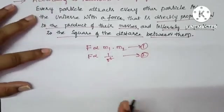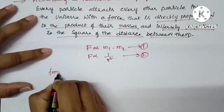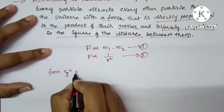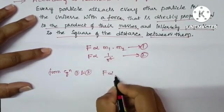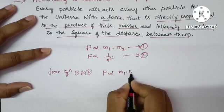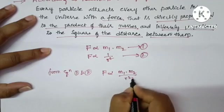From equation number 1 and 2, we can write F is directly proportional to m1 m2 upon r square. This is equation number 3.